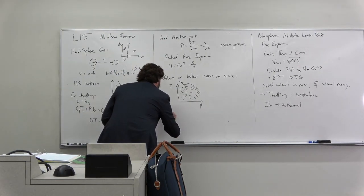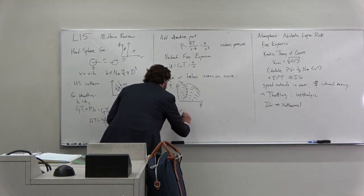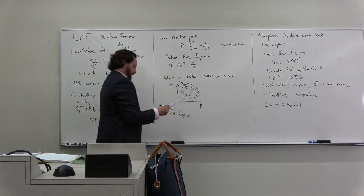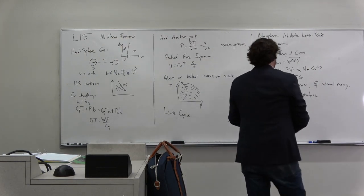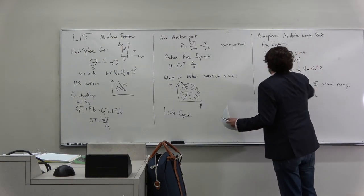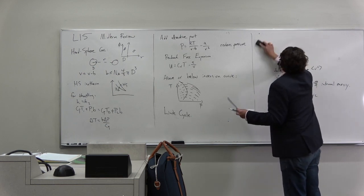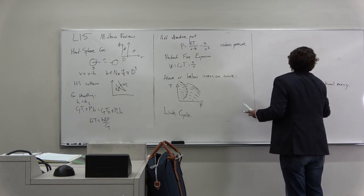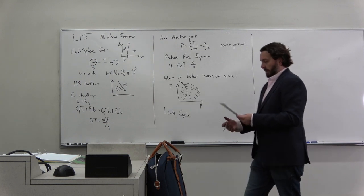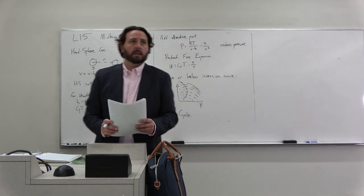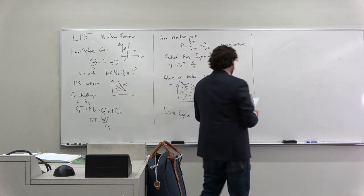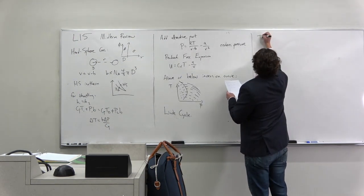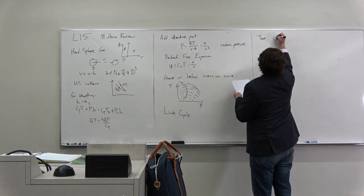This started talking about the Linde cycle, the refrigeration of liquid helium. We talked about how important the heat exchangers were and understood how we could liquefy nitrogen, hydrogen, and then helium - you had to be below the minimum in the inversion curve.